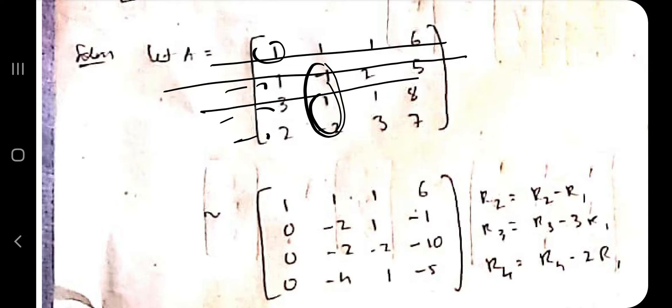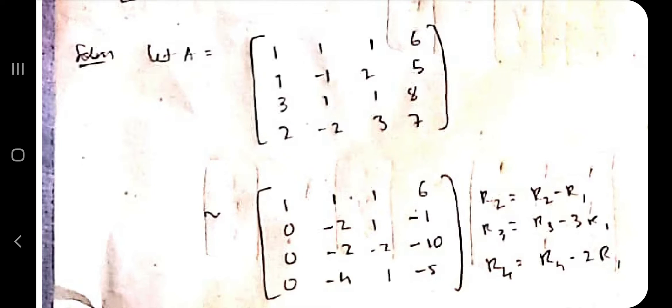To find the rank of a matrix, you convert the matrix into an echelon form. You may have done row elimination methods before — we'll be applying those same techniques here. The key idea is: wherever there is a 1 in a column, all entries below it should be zero. So for the first row, below the leading 1 all three entries should be zero.